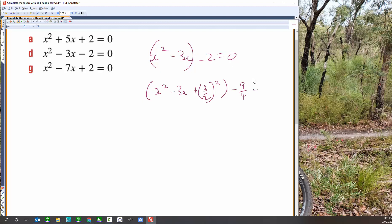Subtract, now 2, I'm going to write that as 8 on 4. So imagine that as 2 over 1. I'm going to go times 4 and times 4 to get my common denominator. We've got x goes there, subtraction goes there, 3 on 2 goes there, all squared.